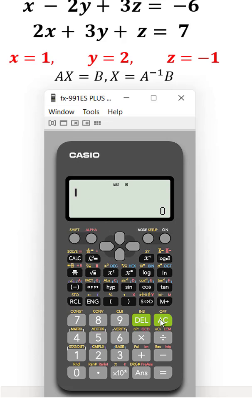And then press AC. Then again, mode, matrix, for matrix 6, matrix B. For matrix B, press 2.